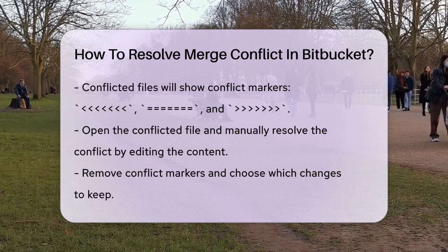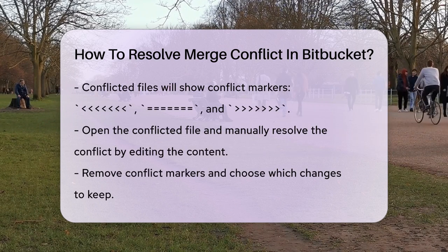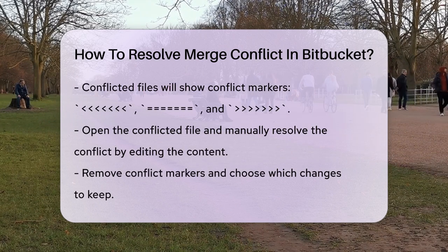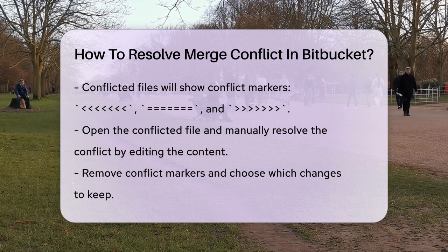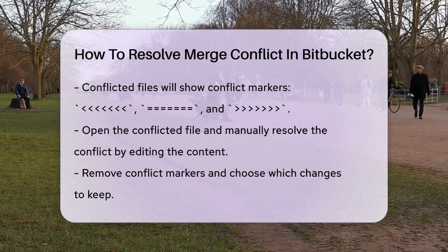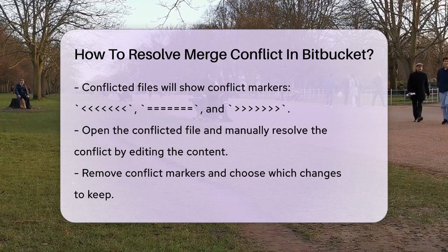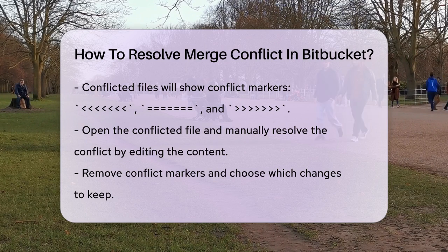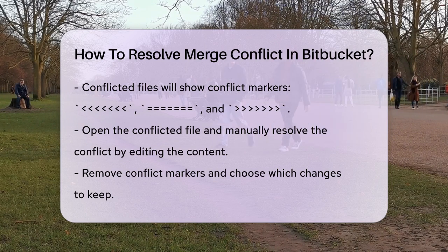Open the conflicted file and resolve the conflict manually. Remove the conflict markers and correct the content to reflect the changes you want to keep. You can choose to keep the incoming changes, the current changes, or a combination of both. Once you've resolved the conflict, save the file.